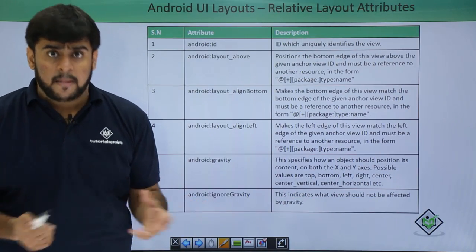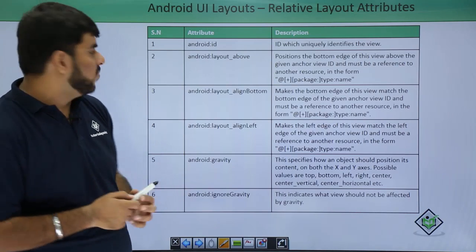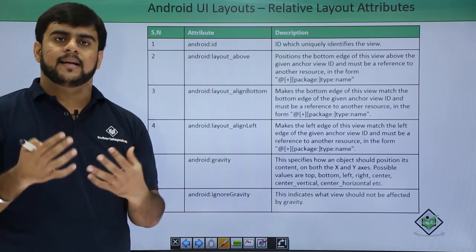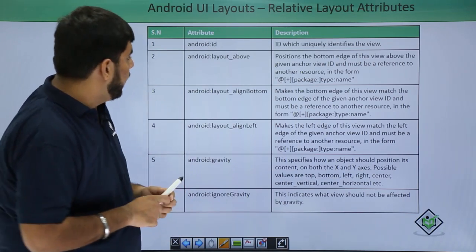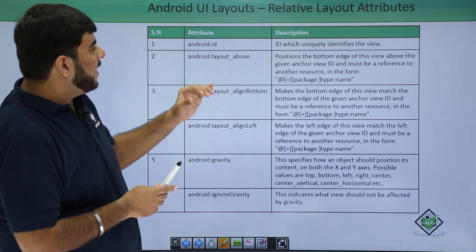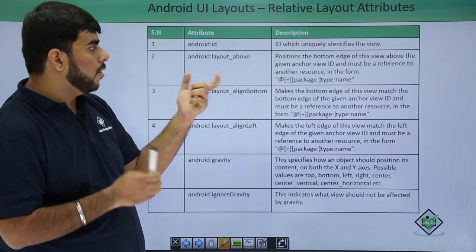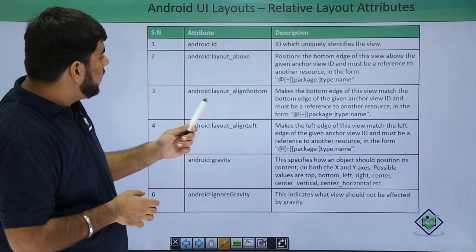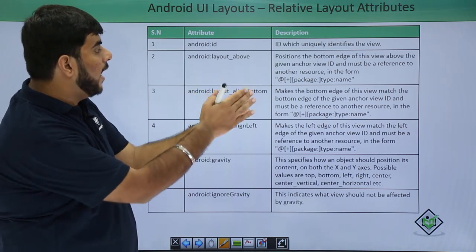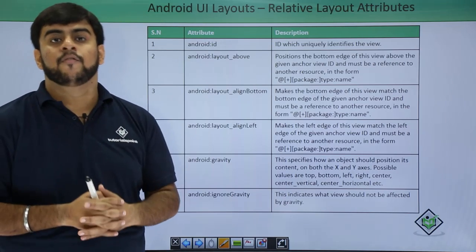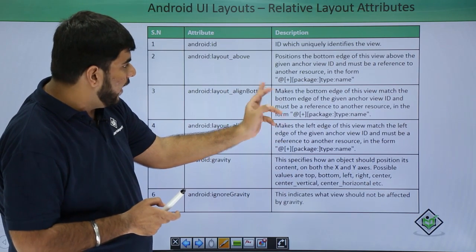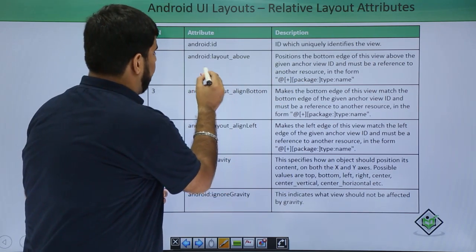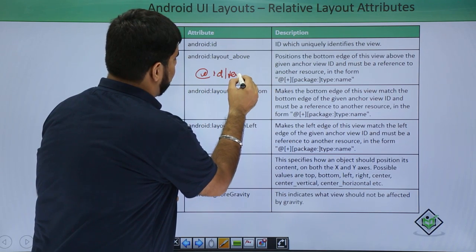Now let's look at the properties by which we can use and align layouts in our own way. The very first property is the ID — a unique name given to that particular view group or layout. Then there is layout_above, by which we can define which layout ID is above it. Similarly we have align_bottom, by which a view matches the bottom edge of the given view ID, defined using the package and the name of the layer, like @+id/text1.